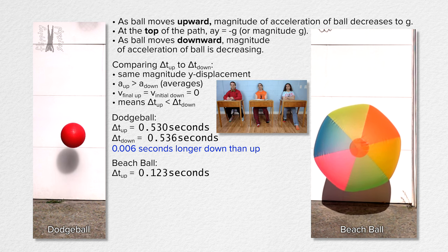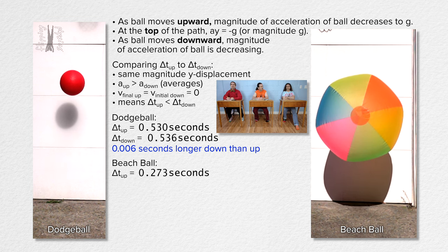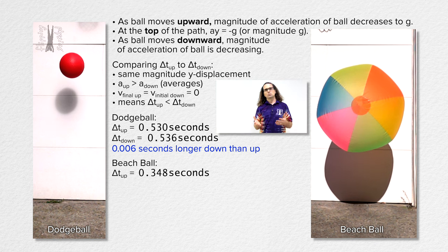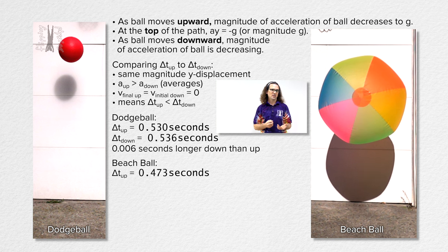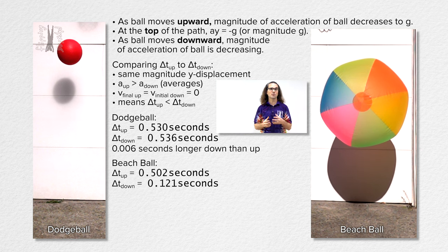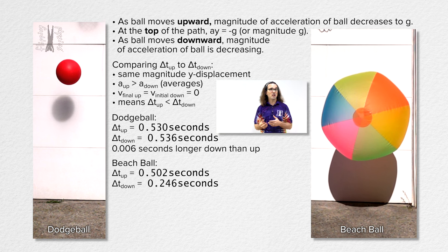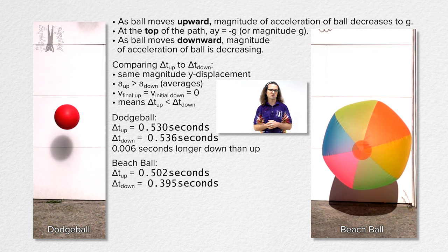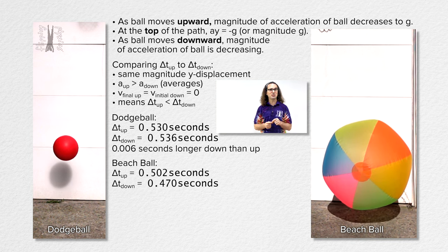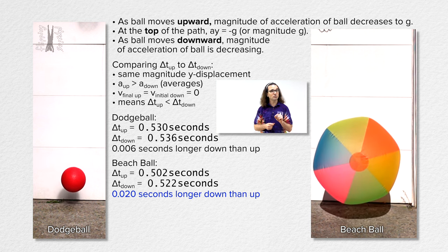The physics works. Six thousandths of a second is not very long, which makes sense because the drag force on this dodgeball is quite small, causing only a very small increase in the time on the way down relative to on the way up. I also tried this with a large beach ball. The beach ball has a much smaller mass and a much larger diameter and therefore a much larger relative drag force. However, the difference for the beach ball is still quite small at roughly 20 thousandths — or two hundredths — of a second.